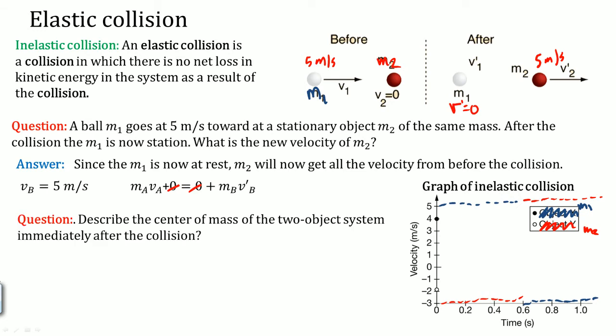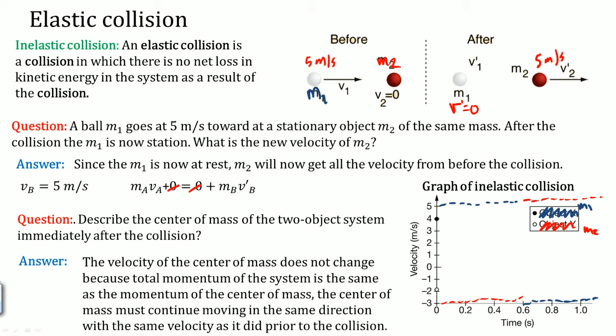Describing the center of mass of the two-object system immediately after collision: the velocity of the center of mass does not change because the total momentum of the system is the same as the momentum of the center of mass. The center of mass must continue moving in the same direction with the same velocity as it did prior to the collision. Please understand: for elastic collisions, kinetic energy is conserved — there's no net loss in kinetic energy as a result of the collision.